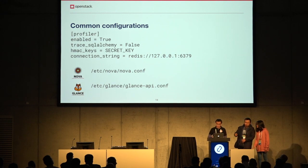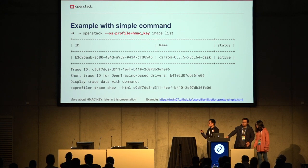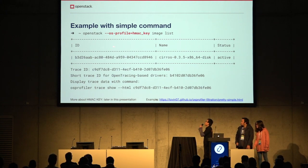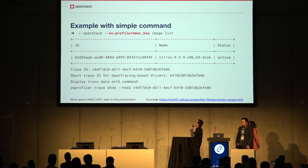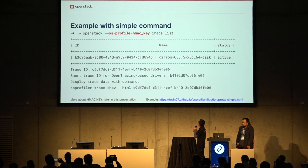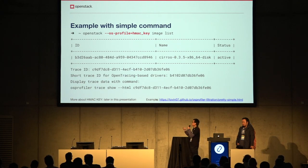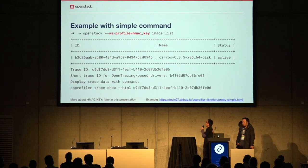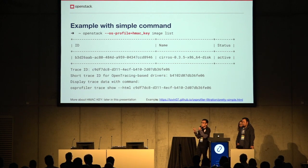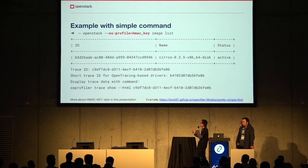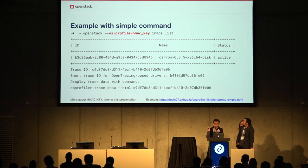For this configuration, with the openstack image list command, you add the --os-profile argument with the HMAC key. Besides familiar output, OS profiler provides information related to the trace ID or span ID for the OpenStack backend driver — in this case, Jaeger tracing. You can use this ID to search in the Jaeger UI dashboard. If you want to generate an HTML representation of this trace, you can type the corresponding CLI command, and I'll show you an example.